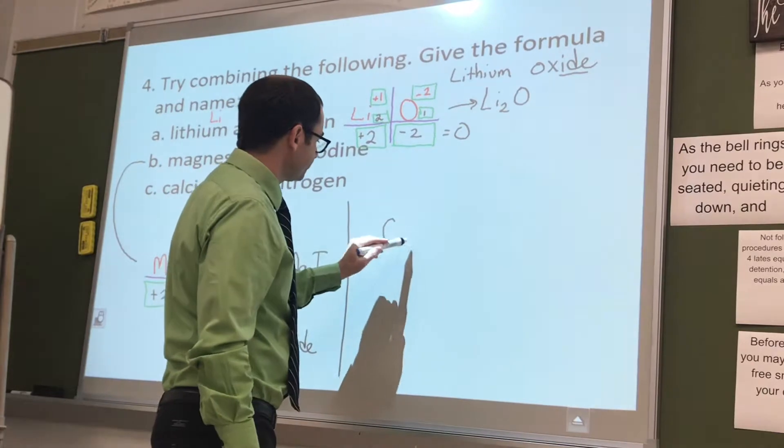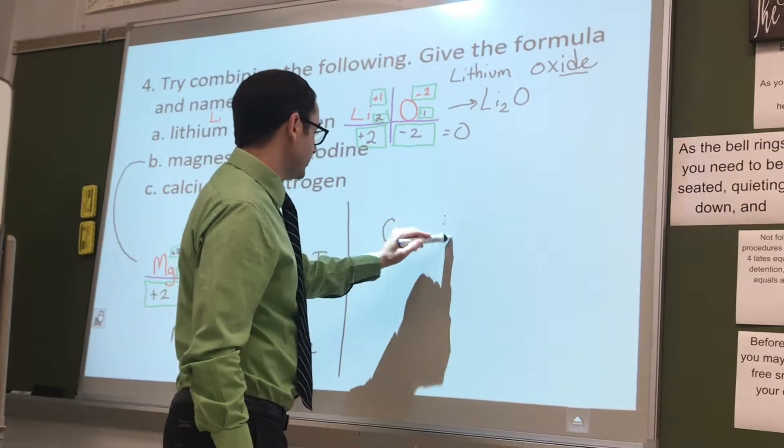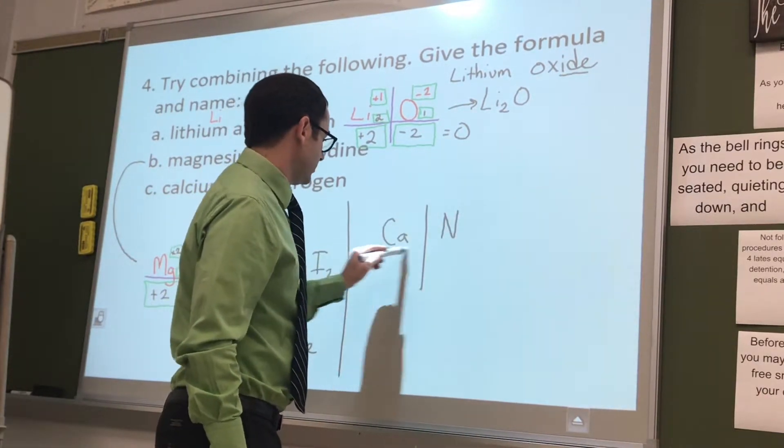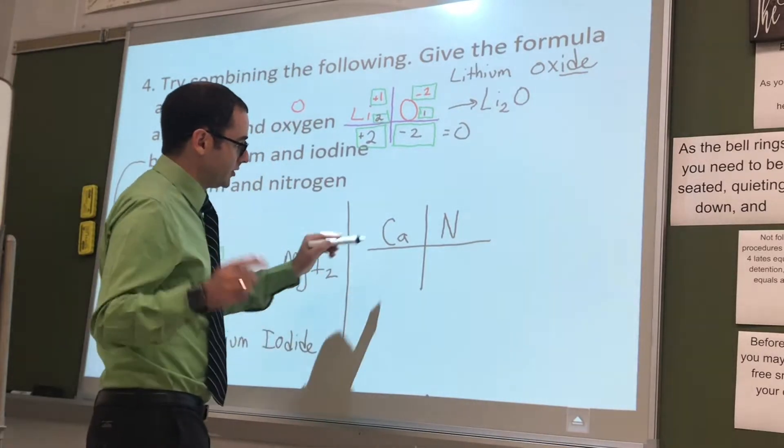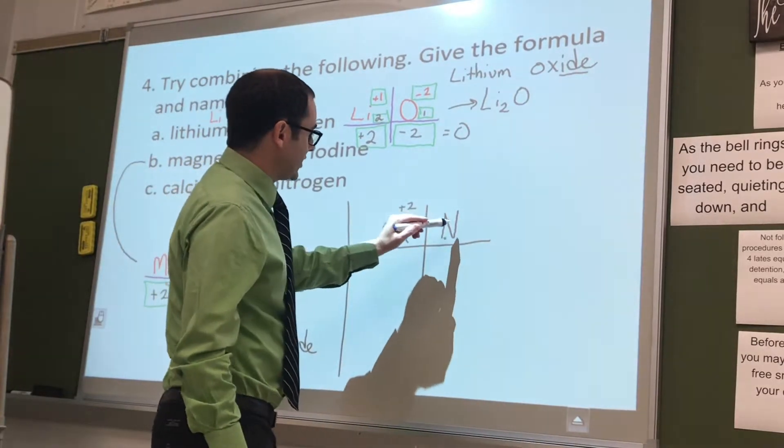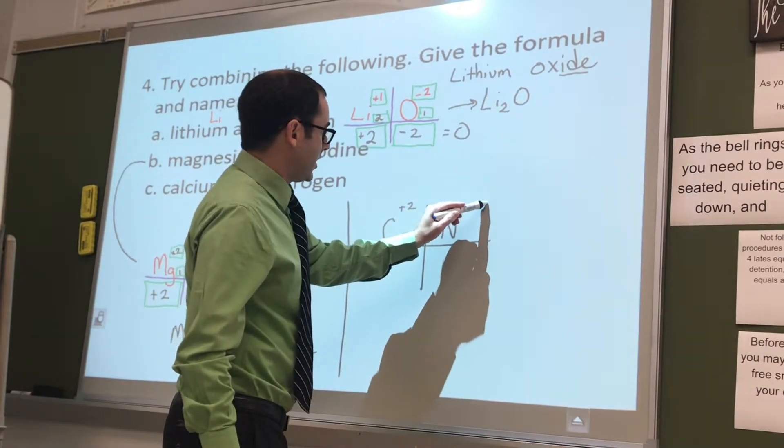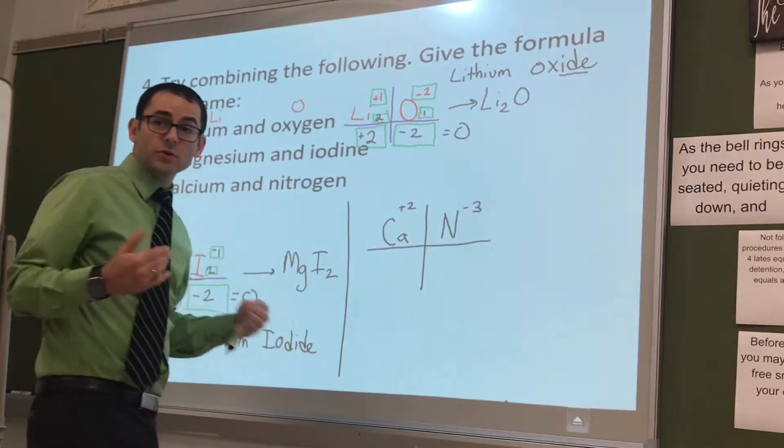So, with this one, we have calcium. We have nitrogen. Alright, what's calcium's charge? Plus two. What's nitrogen's charge? Minus three. Okay, what least common multiple?